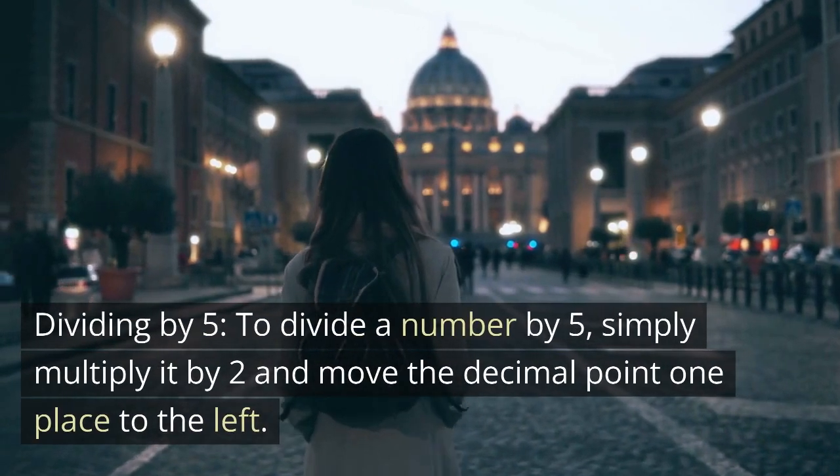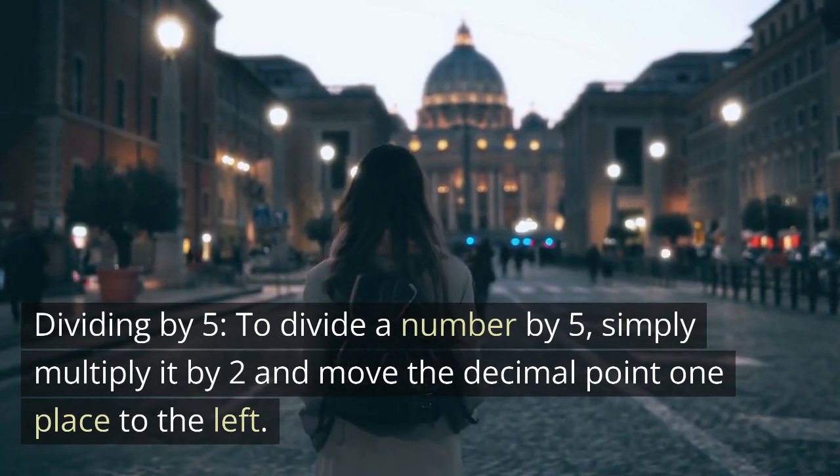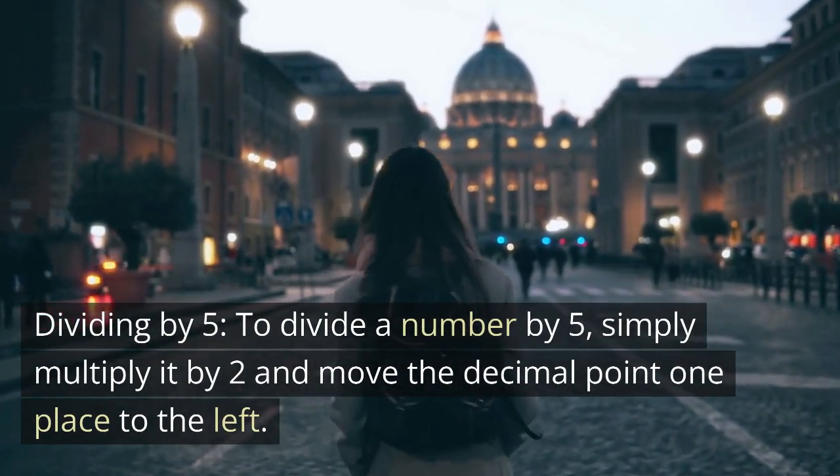Dividing by 5: To divide a number by 5, simply multiply it by 2 and move the decimal point 1 place to the left.